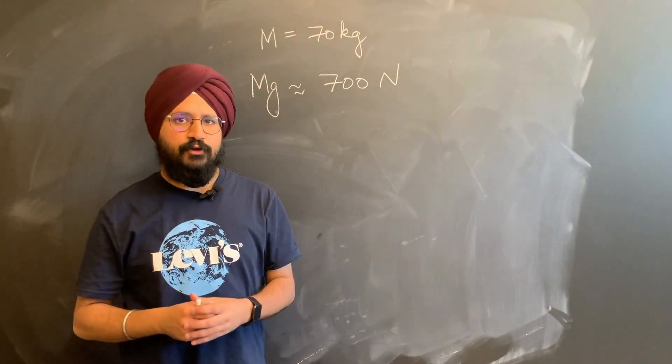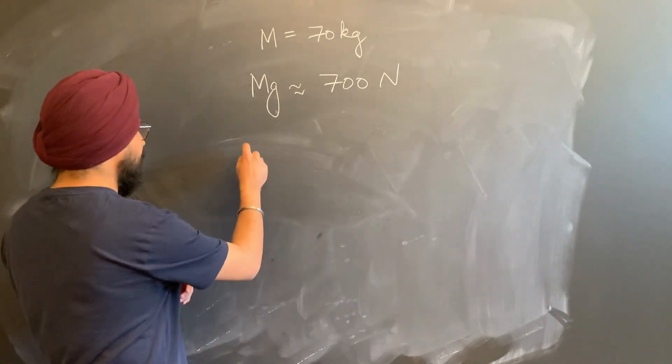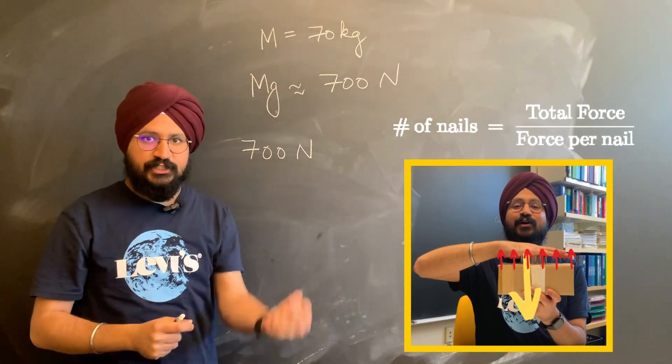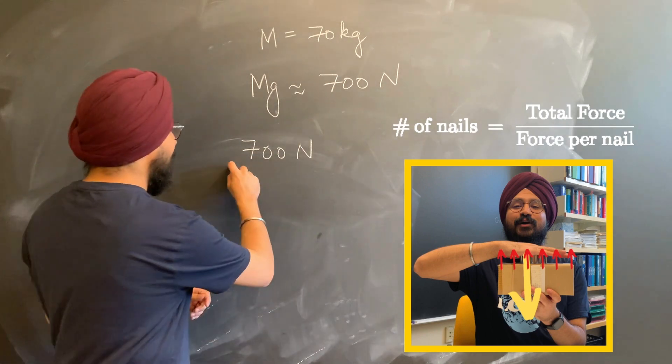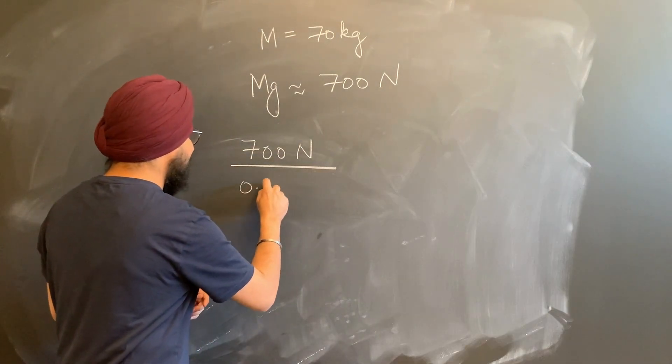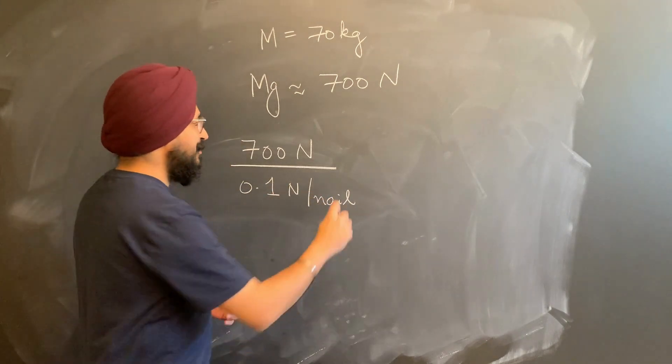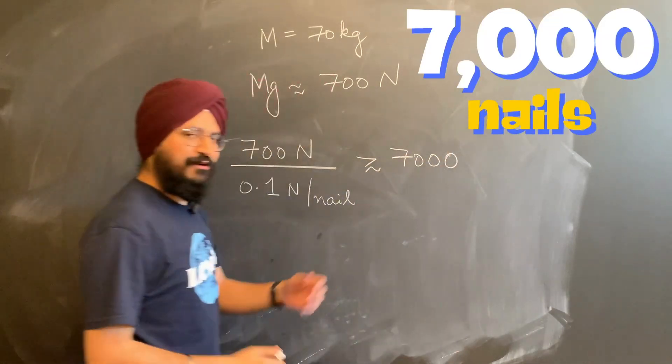To keep the force on each nail at about 0.1 newtons or less, we would need to spread that 700 newtons of gravitational force, the weight of the Fakir, over many nails where each nail can take about 0.1 newtons worth of force, giving us to have at least 7,000 nails if not more.